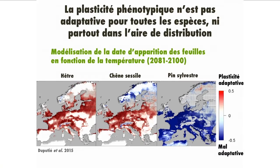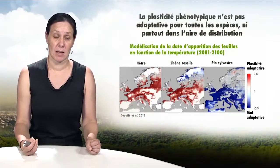Here, we have compared two types of scenarios. In the first scenario, we suppose that the date that leaves start to grow on trees in the spring depends on the temperature in the spring and winter, as can be observed in nature. In the second scenario, we suppose that the date of appearance of leaves on trees is the same every year. For three species — beech, oak, and pine — these maps show in red the areas where variation in leaf emergence based on temperature allows the species to better persist and adapt to future climate change compared to a situation where the date is not variable. In blue are areas where the dates of appearance of leaves changing based on temperature will compromise the survival of species.